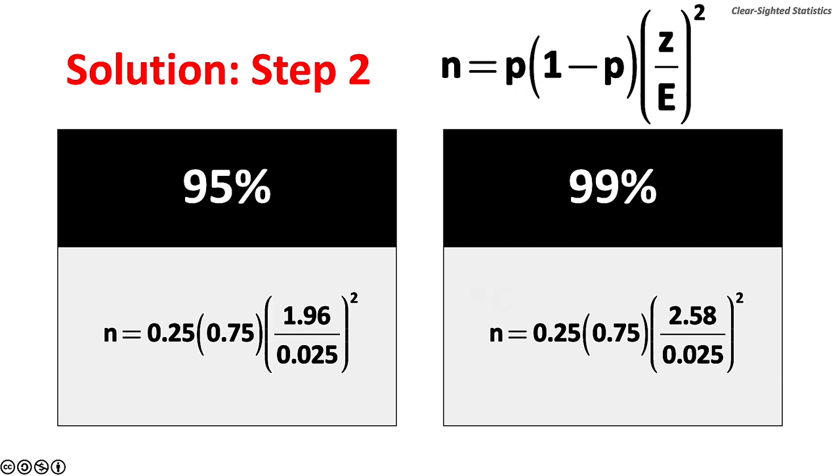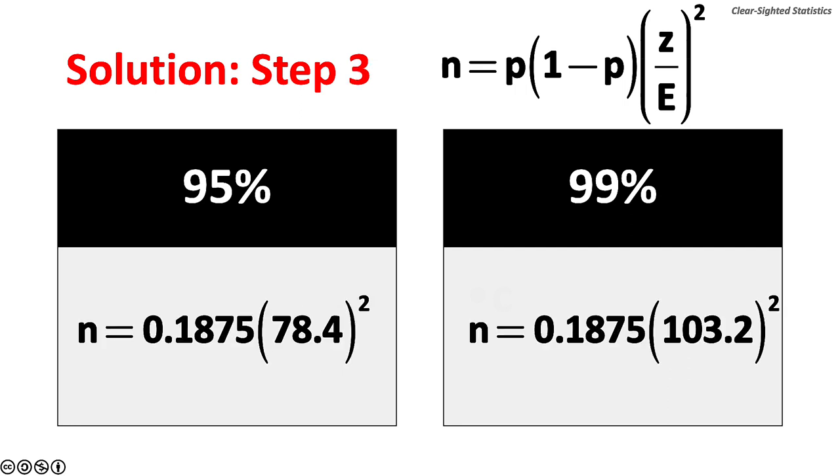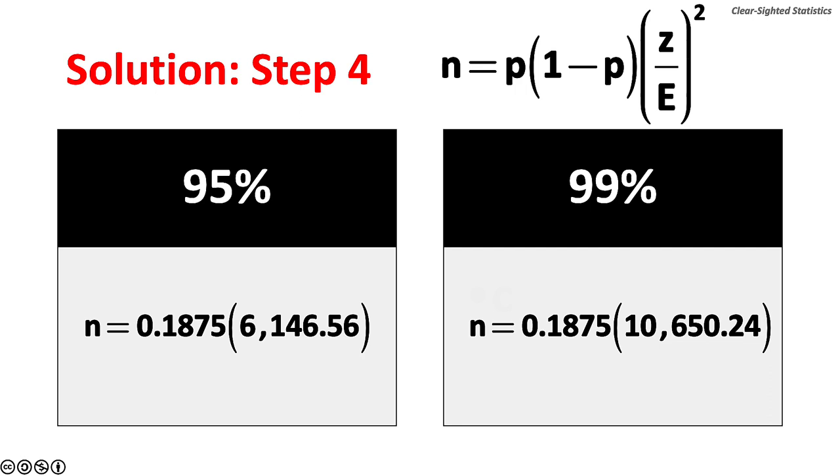Step 3. Multiply P times 1 minus P and then find z over the allowable error. Step 4. Multiply P times 1 minus P and find z over e squared.